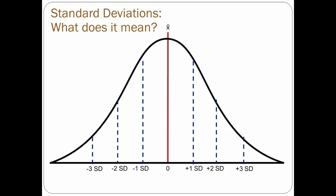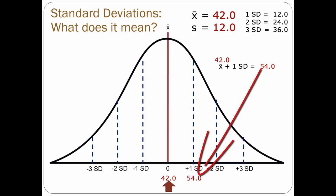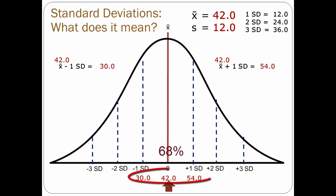Let's see how this works. Assume we have a mean of 42 and a standard deviation of 12. The mean goes in the very center of the distribution curve. One standard deviation is 12, two standard deviations would be 24, and three standard deviations would be 36. Adding one standard deviation to the mean: 42 + 12 = 54, plotted at one standard deviation above the mean. Subtracting: 42 − 12 = 30, plotted at one standard deviation below the mean. Assuming normal distribution, 68% of scores are between 30 and 54 — plus or minus one standard deviation of the mean.